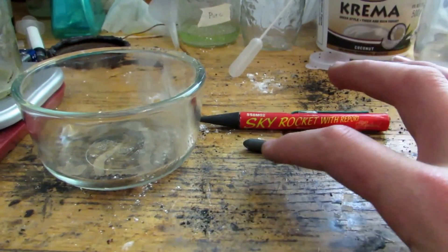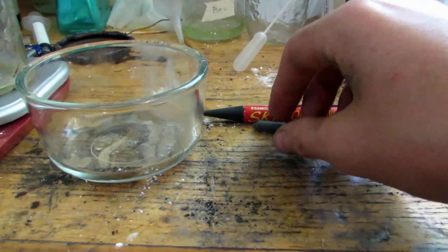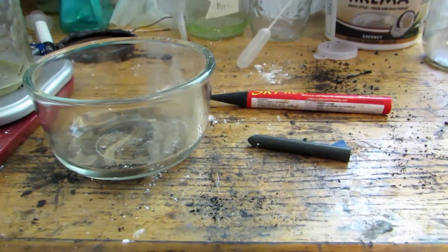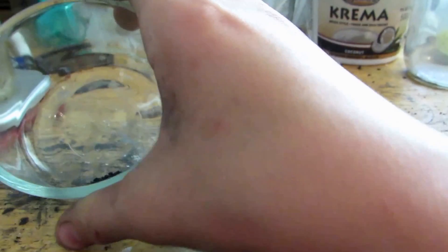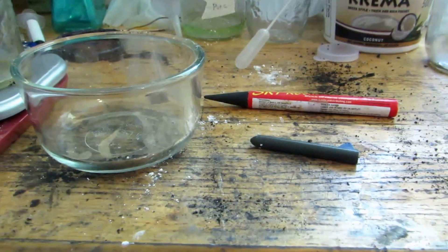So I'm going to take this apart and show you the different components on the inside of the piece that gets launched up to the sky. We can save this black powder for future experiments but we're not going to be using it today.